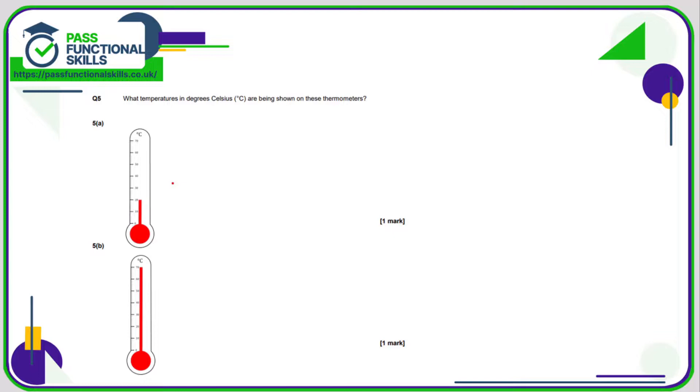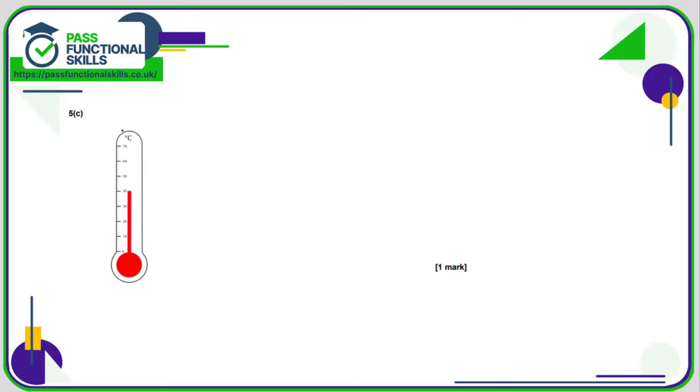Let's have a look at some of these thermometers. We can see the mercury in the thermometer has gone up to 20, so that's 20 degrees C. Here it looks like it's gone up to 70 degrees C. 5c, 40 degrees C.